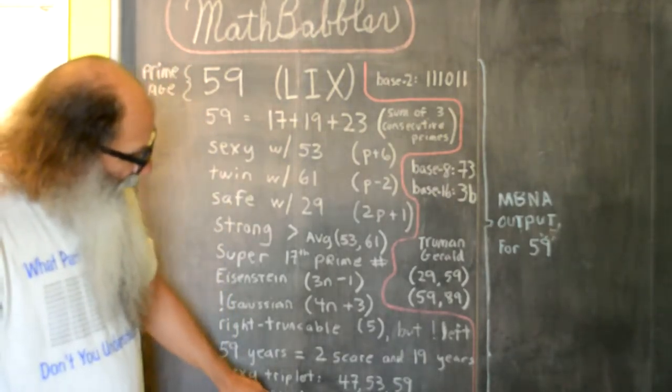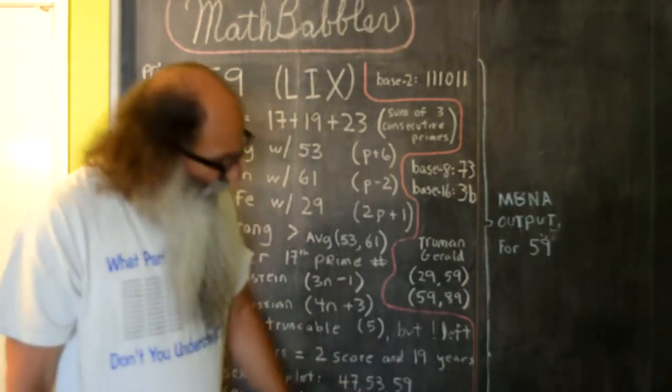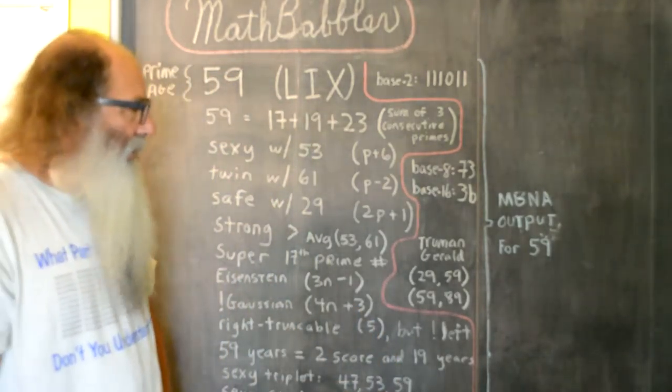And it's also in the sexy quadruplet 41, 47, 53, 59, because all four of those numbers are prime and they differ by 6.